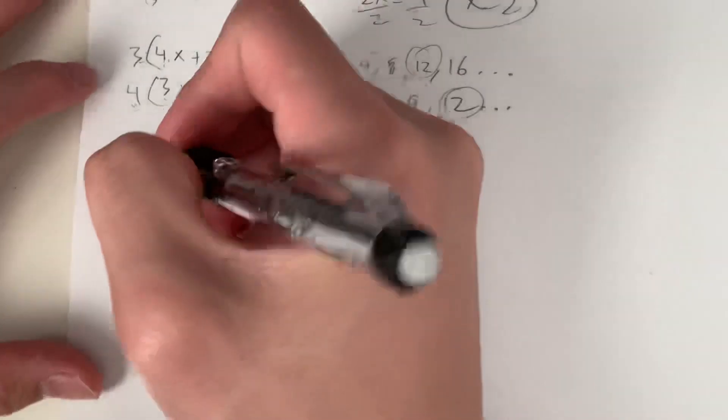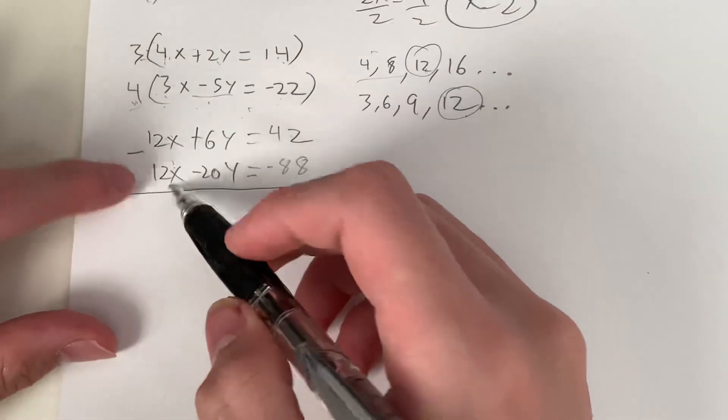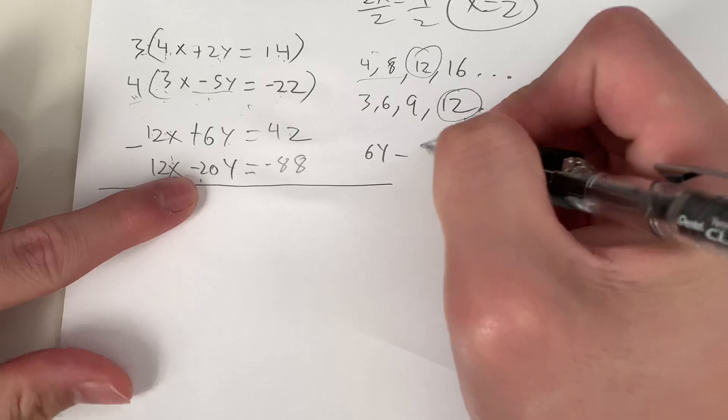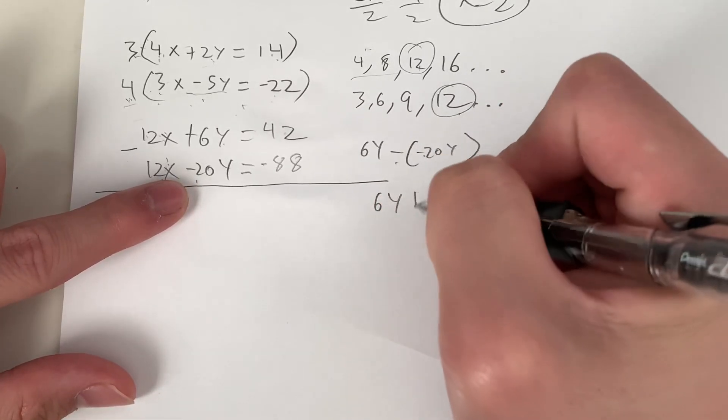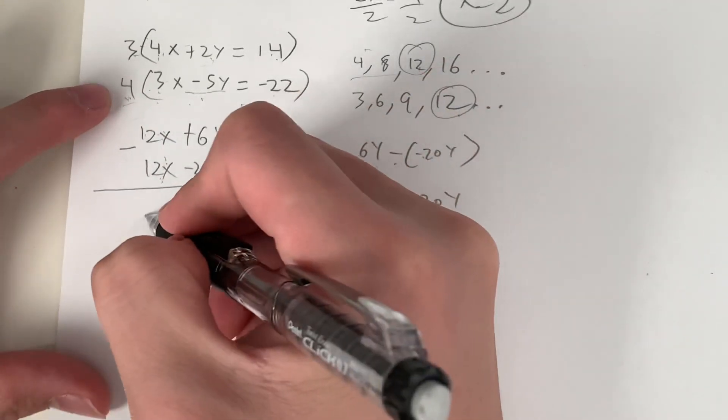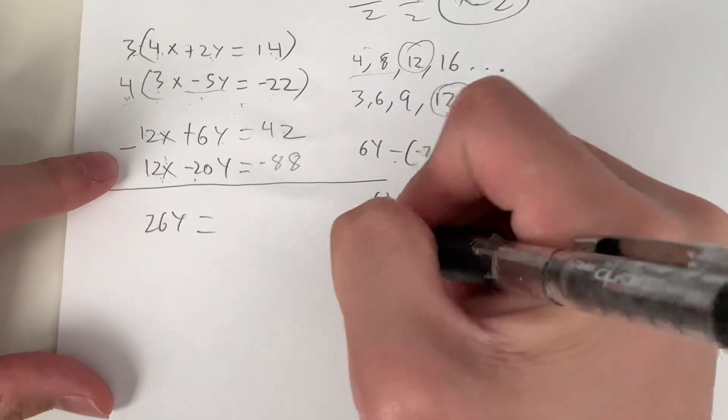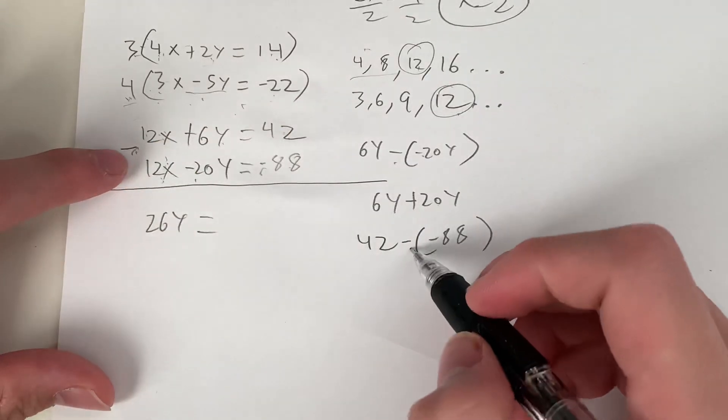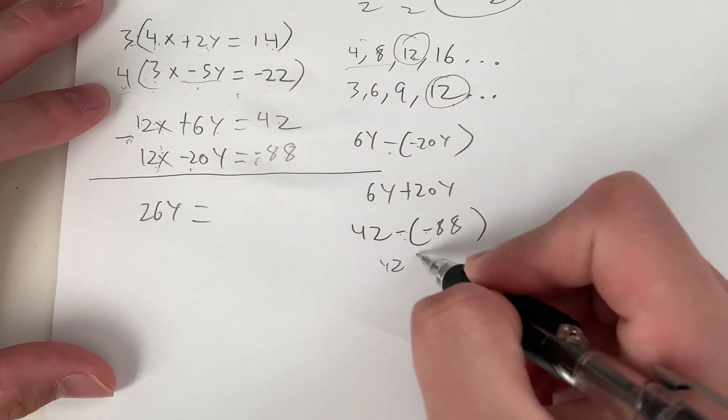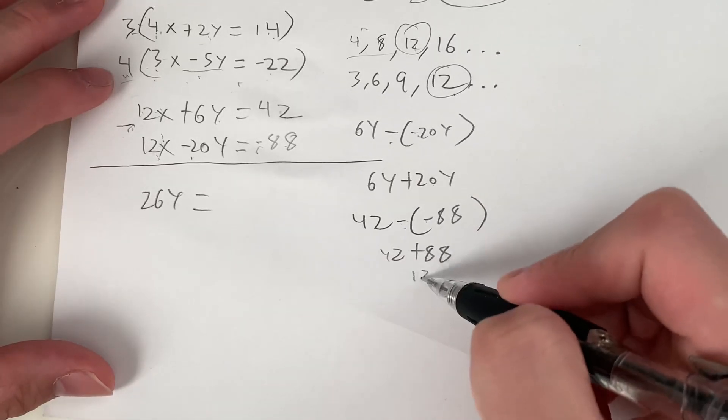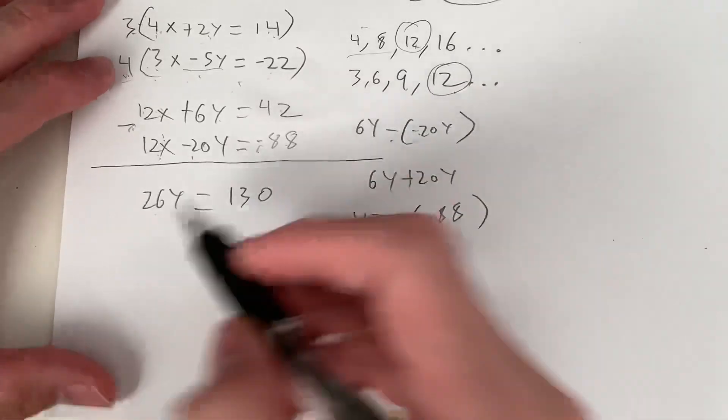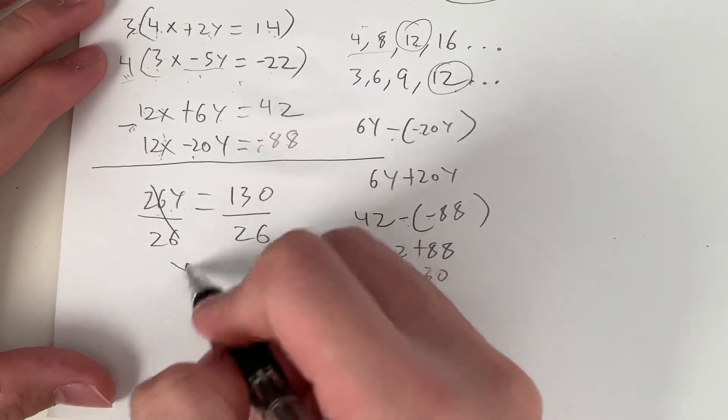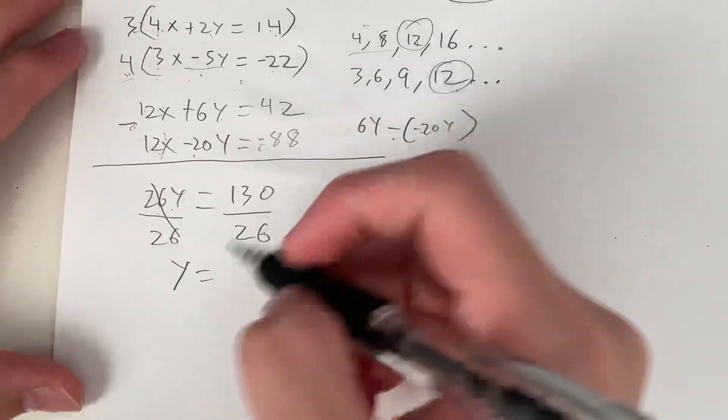Now we have to use elimination, so we subtract again. As long as they align, they'll cancel out. 12x minus 12x cancels out. 6y minus negative 20y. That's equal to 6y plus 20y, which is 26y. That's equal to 42 minus negative 88. Remember to carry through this negative. 42 plus 88 is 130, giving us 26y equals 130. Now in order to get y by itself, we divide both sides by 26. Y equals 130 over 26, which is 5. And now that we have the value of y equals 5, how do we find the value of x? We plug it back in.